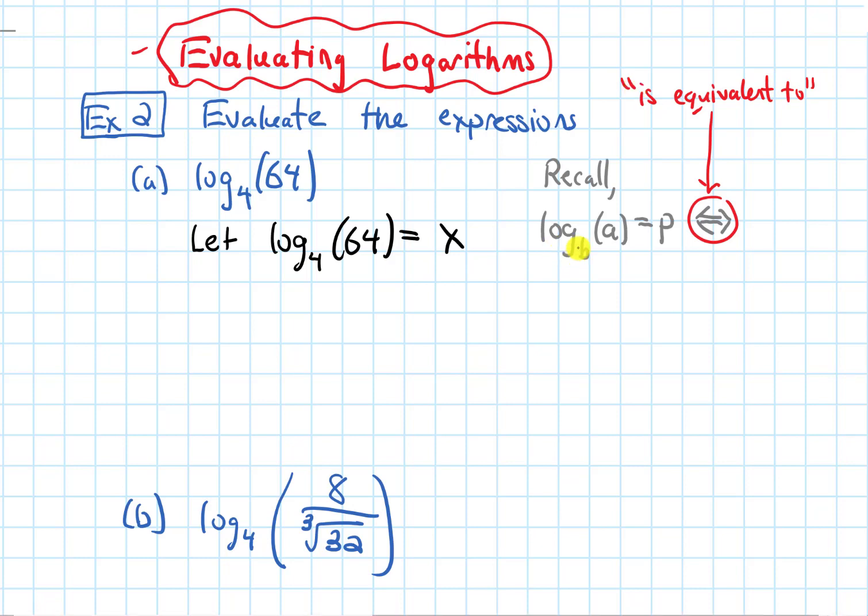The base of the log will become the base of an exponent. The p will become the power, and then the a will go on the other side. Another way that I think about this is a log and an exponential function are inverses of each other. Notice that the input of the log function becomes the output of the exponential, and the output of the log function is the input of the exponential function.